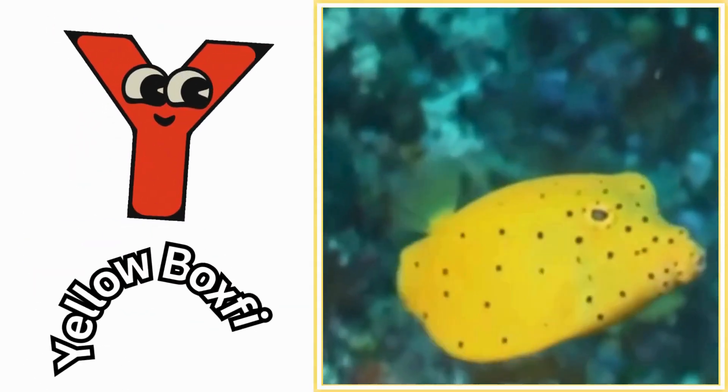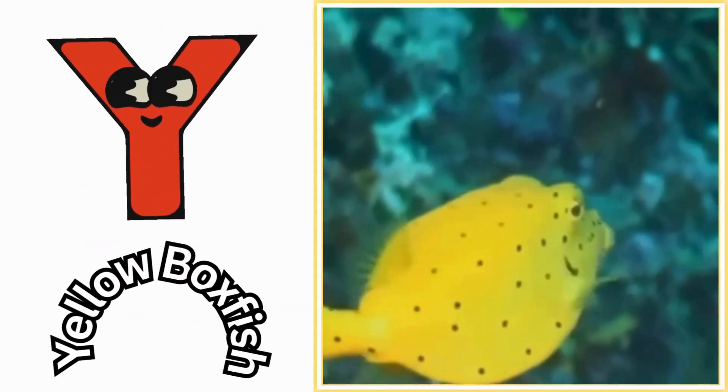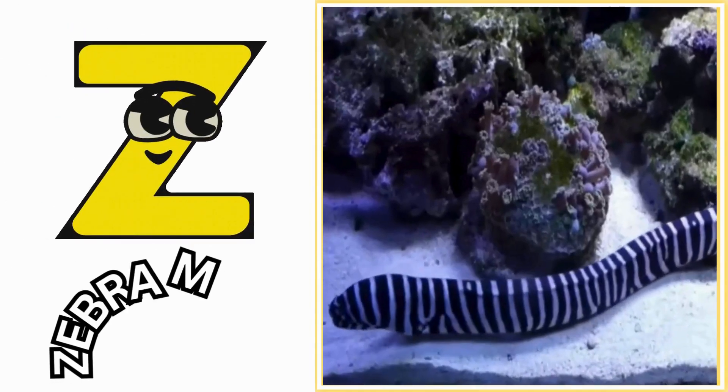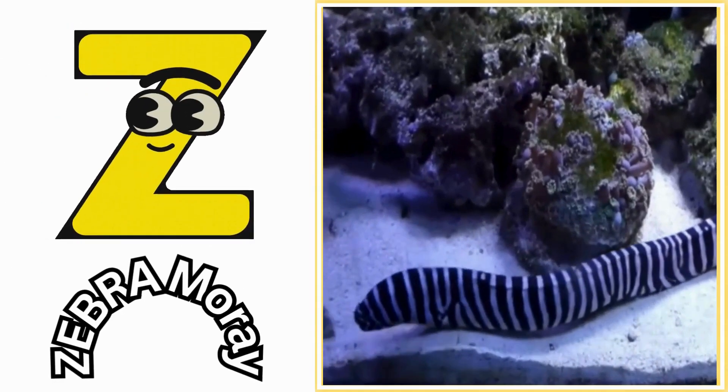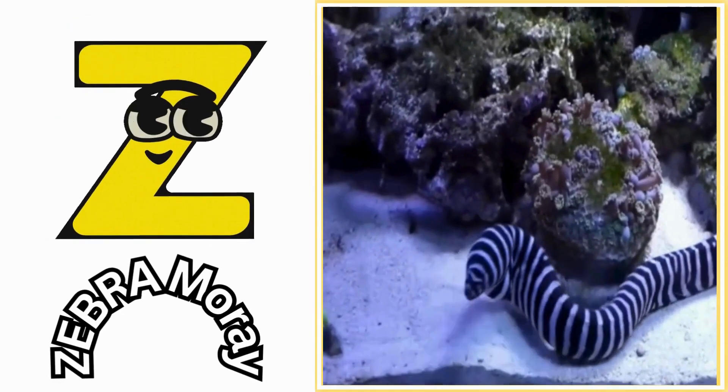Y is for yellow boxfish. Yeah, yellow boxfish. Z is for zebra moray. Z, zebra moray.